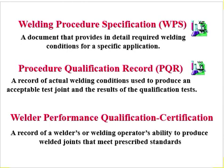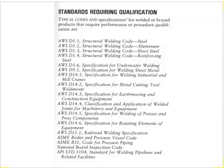The second page covers standards requiring qualification. There are many — here it is mentioned AWS D1.1, D1.2, D1.3, and also ASME B31 code for pressure piping and API standard 1004. Basically AWS and API are mentioned here. If you go to AWS D1.1 or any standard, about 90% of the basic requirements are common. There are some pre-qualification requirements for structural and sheet applications, and ASME has different requirements.